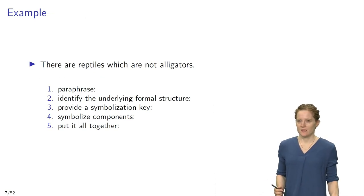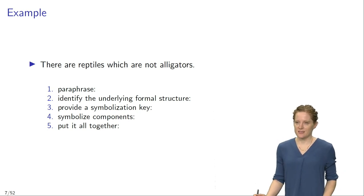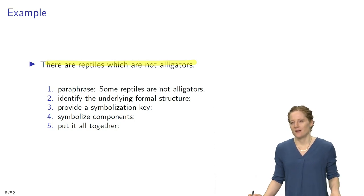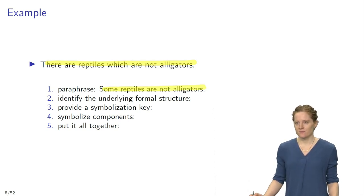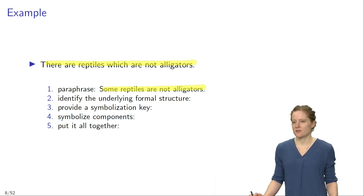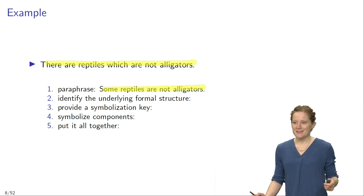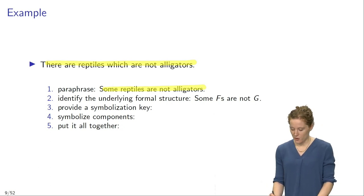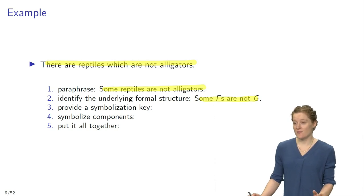Here's an example. Suppose you want to symbolize the sentence 'There are reptiles which are not alligators.' According to the strategy, we should start with a paraphrase. We can say 'Some reptiles are not alligators,' replacing 'there are reptiles which' with 'some reptiles.' This paraphrase makes the underlying formal structure transparent: our sentence has the form 'some Fs are not G,' which is very close to one of the general forms we have seen.